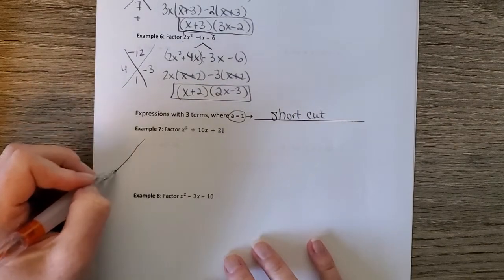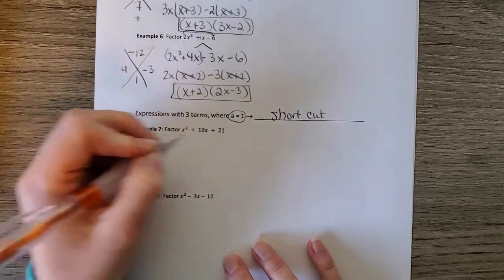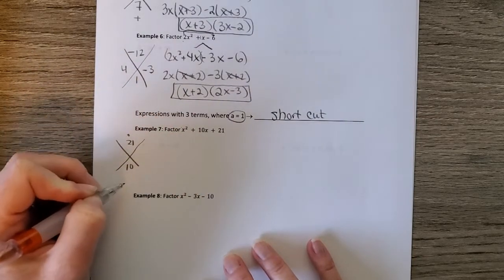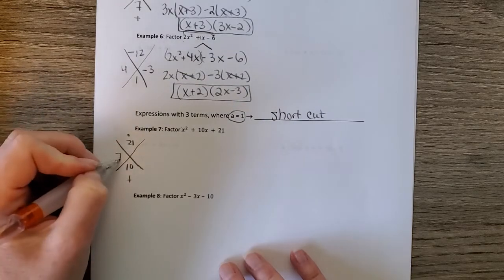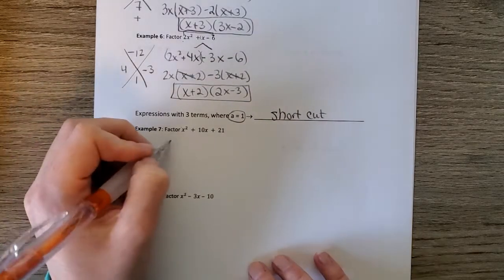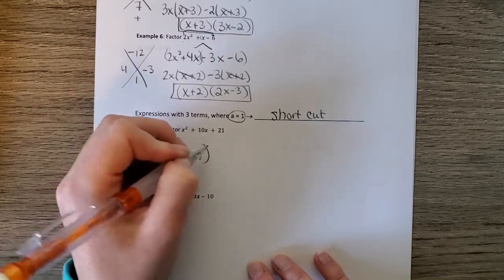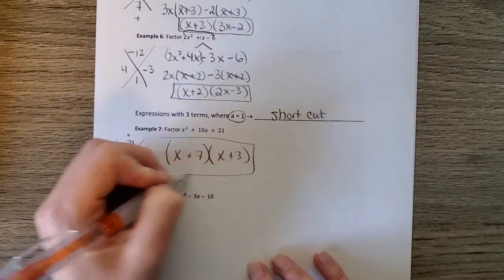So now we make our x. 1 times 21 is 21. 10. What multiplies to 21 adds to 10? 7 and 3. So then our factors are x plus 7 and x plus 3. And we're done.